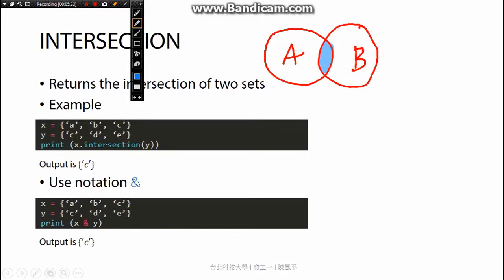We can alternatively use the notation and. This is more convenient. So x equals a, b, c, y equals c, d, e, print x and y. Also the same result, c.